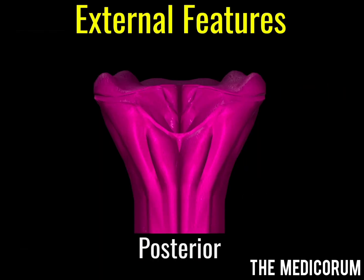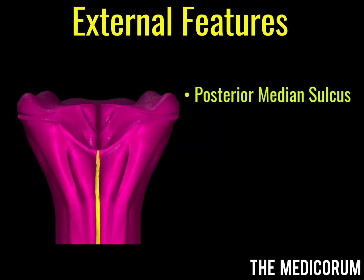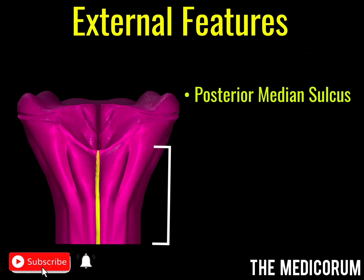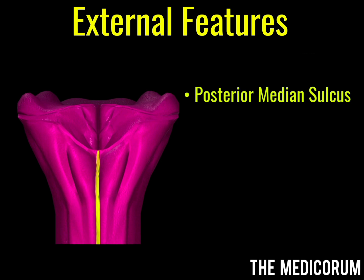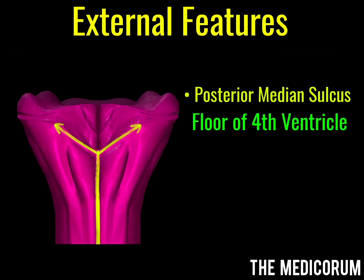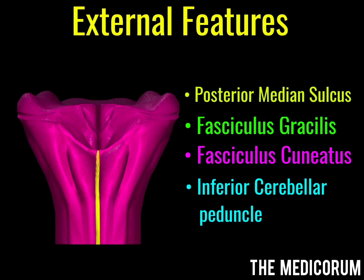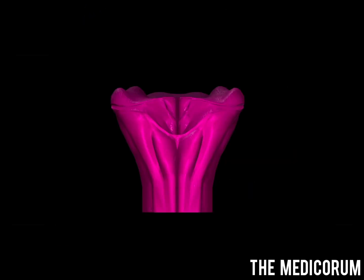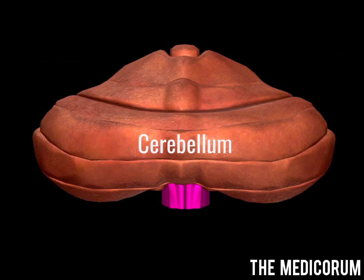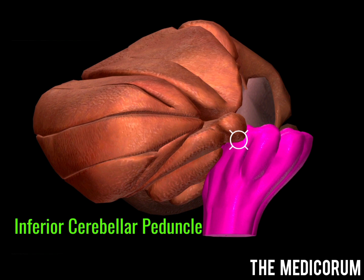Coming on to the posterior side of the medulla — the posterior side has the posterior median sulcus, which is continuous below with the corresponding sulcus of the spinal cord. This sulcus is present only at the lower part of the medulla. The posterior median sulcus diverges to form a triangular area, and that triangular area forms the floor of the fourth ventricle. On either side of the posterior median sulcus we have three longitudinal elevations: from medial to lateral they are fasciculus gracilis, fasciculus cuneatus, and inferior cerebellar peduncle. On the posterior side of the medulla there is attachment of the cerebellum via the inferior cerebellar peduncle.